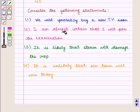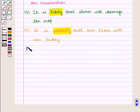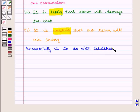In these statements, each word, i.e. probably, certain, likely, unlikely, describes the probability. So we can say that probability is to do with likelihood or chance of events occurring.